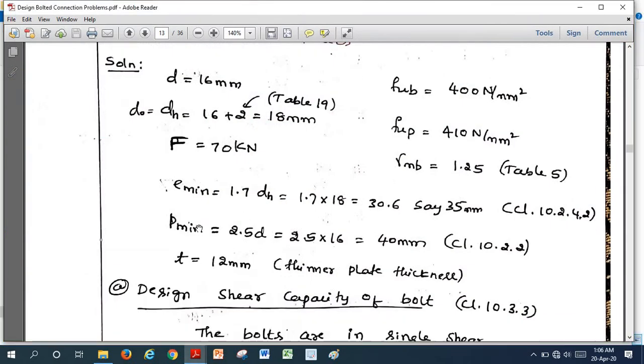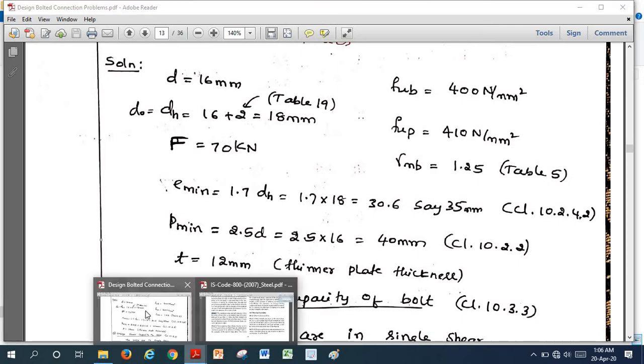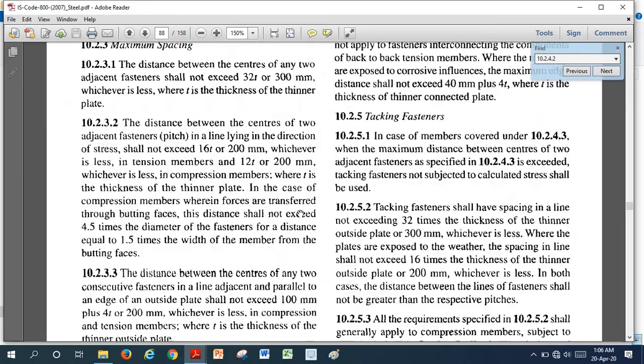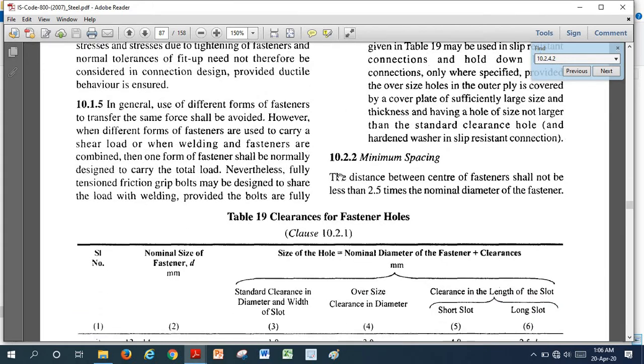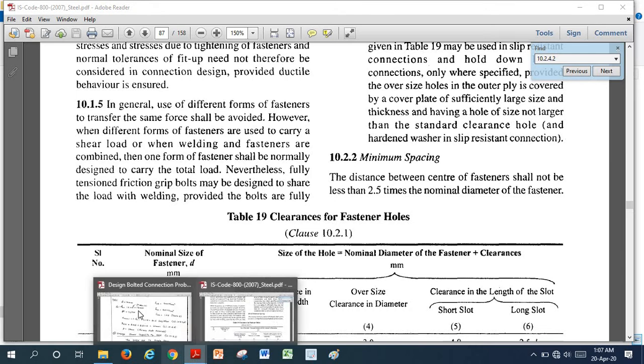If you see pitch minimum, we should take 2.5 times t. If you see code 10.2.2, minimum spacing of fasteners, the distance between centers shall not be less than 2.5 times the nominal diameter of the fasteners. This is what we need to take for pitch.